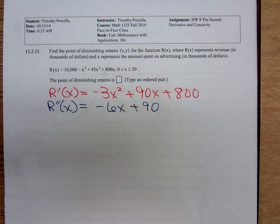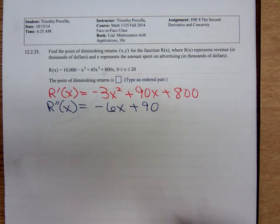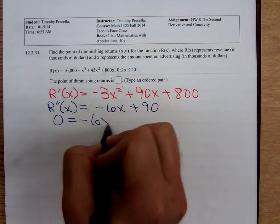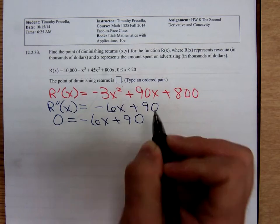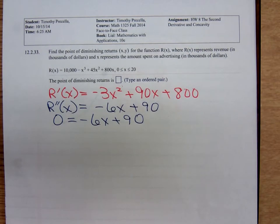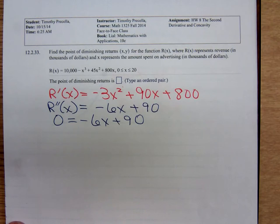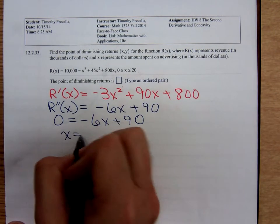Now, we need to ask ourselves, when is R double prime equal to 0? When is it undefined? It's always defined. It's a polynomial function. So, when is the second derivative equal to 0? And that's going to give us, adding 6x to both sides, dividing by 6, we're going to get an x value of 15.